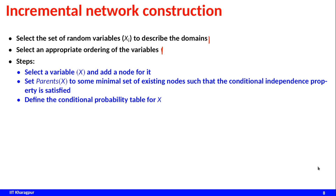The typical steps followed in incremental network construction are: choose a variable and add a node for it, then set the parents of X to some minimal set of existing nodes such that the conditional independence property is satisfied. So I choose a node, add it, and among the nodes already added, I try to see which previous random variables are influencing this one and make them parents of this node.